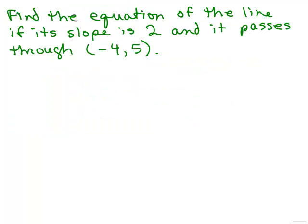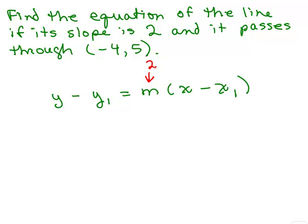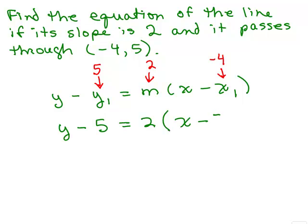So we need to learn this formula: y minus y1 equals m times x minus x1 — remember the parentheses. Let's use Method 2 on the same example. I write the point-slope formula y minus y1 equals m times x minus x1, and plug in 2 for the slope, 5 for y1, and negative 4 for x1. Be careful with your negative signs. So we get y minus 5 equals 2 times x minus negative 4. Note: x minus negative 4 is the same as x plus 4.